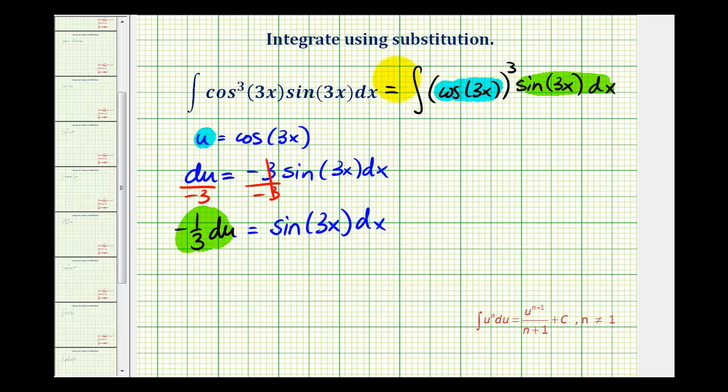Now, let's go ahead and rewrite the integral in terms of u. We'll have the integral of u to the third. And then, we can replace sine 3x dx with negative 1/3 du. So, we'll put the du here and we'll pull out the negative 1/3.